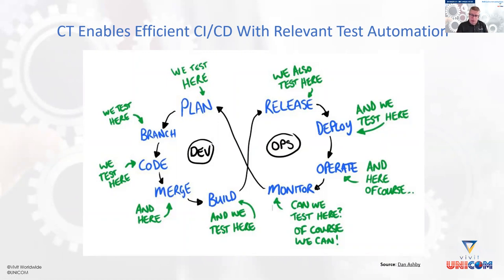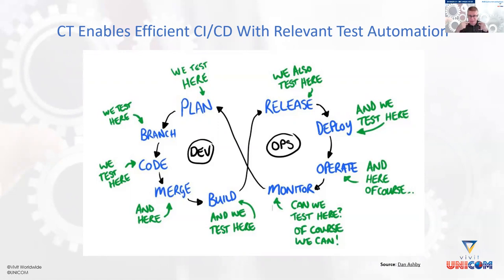My colleague Dan Ashby created this nice visual. You want to test in each and every phase — from planning, requirements gathering, the first code commit, integration to CI, functional testing, build acceptance testing, deployment to production, and monitoring in production — the shift left and shift right, the merge of the two different edges of testing. Continuous testing enables you to do this efficiently in the CI/CD process.